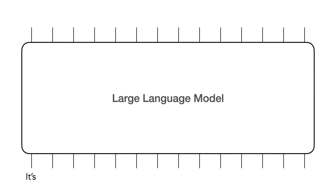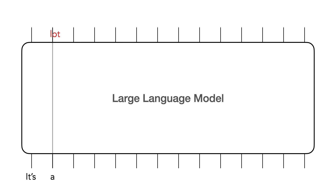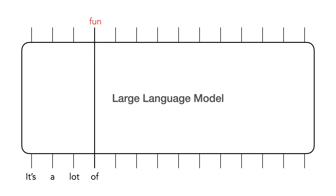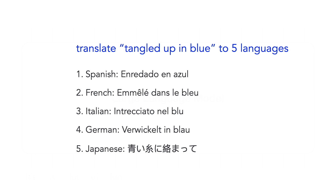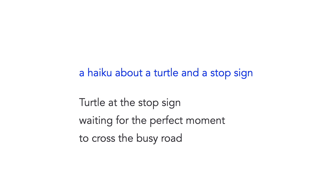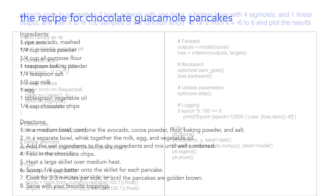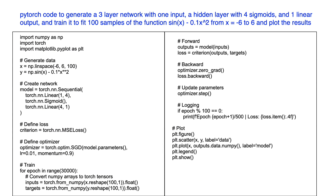These image generators are based on large language models, which are big neural networks that learn to predict the next word in a sentence. And if you saw our short video on large language models, you'll remember that they can do some pretty amazing things, like translate languages, write poems, create recipes, and even generate computer code.